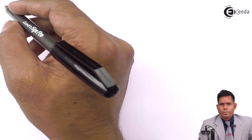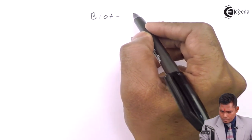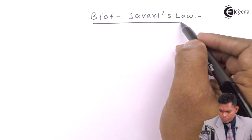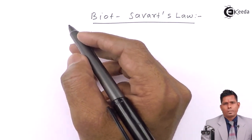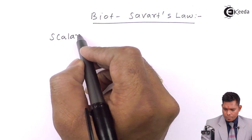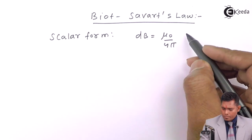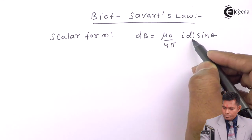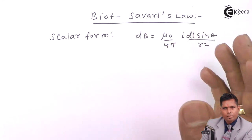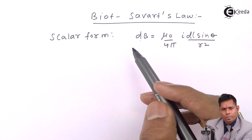Hello students, today we will write the vector form of the Biot-Savart Law. The scalar form we've already read about, so let us see how we can write the vector form. This is the scalar form of Biot-Savart, where dB is the magnetic field or magnetic induction at a point from a conductor which carries a current I. The conductor can be of any shape.